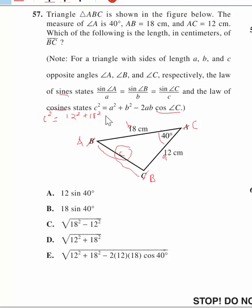Minus 2AB. So I've got 2 times A, we've got it again, which is 12, times B, which is 18, cosine of 40, angle C.